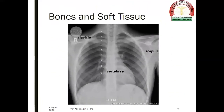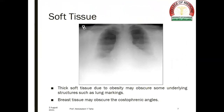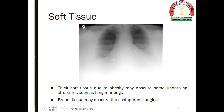Bones and soft tissue. We should be able to see the clavicles, the scapulae, the vertebrae, and the ribs — the posterior and anterior ends of the ribs. Thick soft tissue due to obesity may obscure some underlying structures such as lung markings. Breast tissue may obscure the costal phrenic angles, like in this slide.